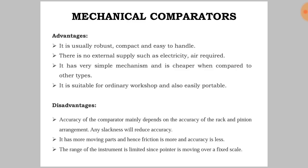Disadvantages: The accuracy of the comparator mainly depends on the accuracy of the rack and pinion arrangement, and any slackness will reduce accuracy. It has more moving parts, and hence friction is more and accuracy is less. The range of the instrument is limited since the pointer is moving over a fixed scale.